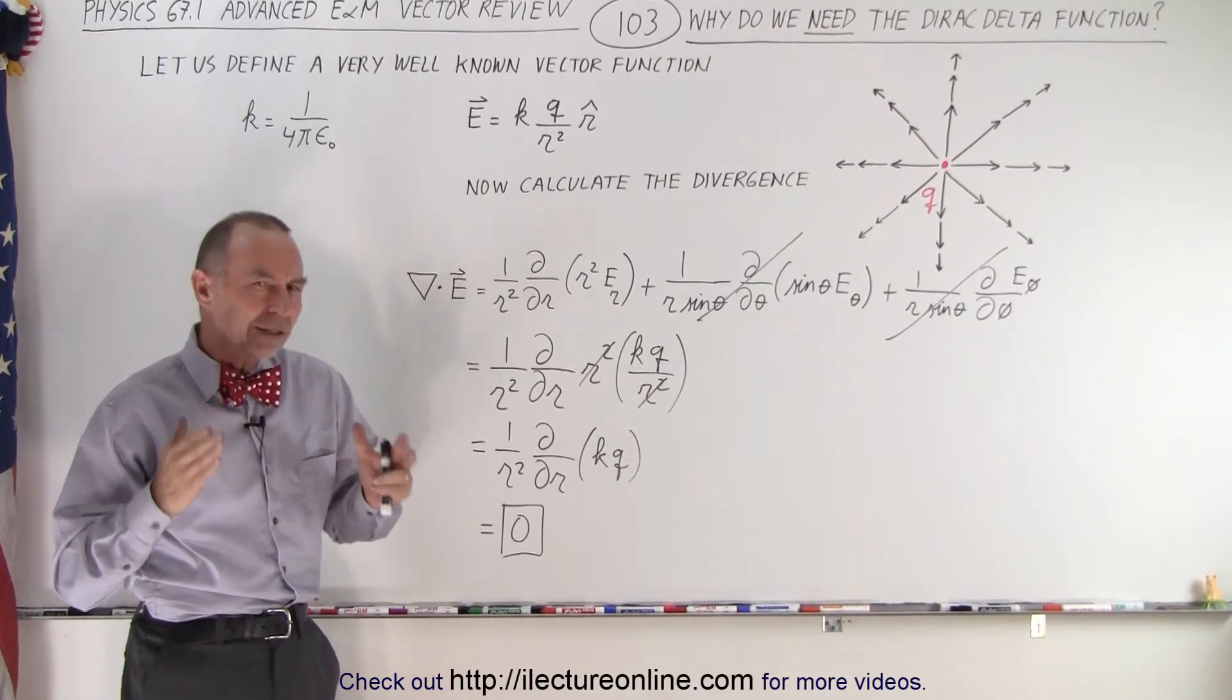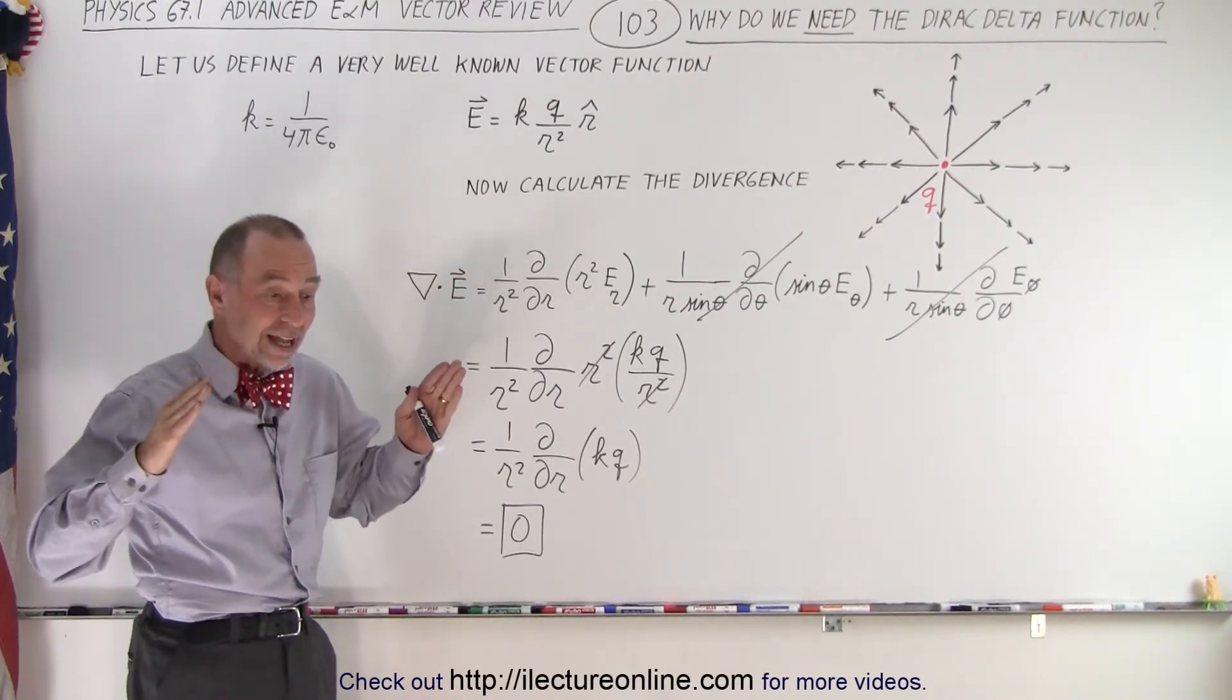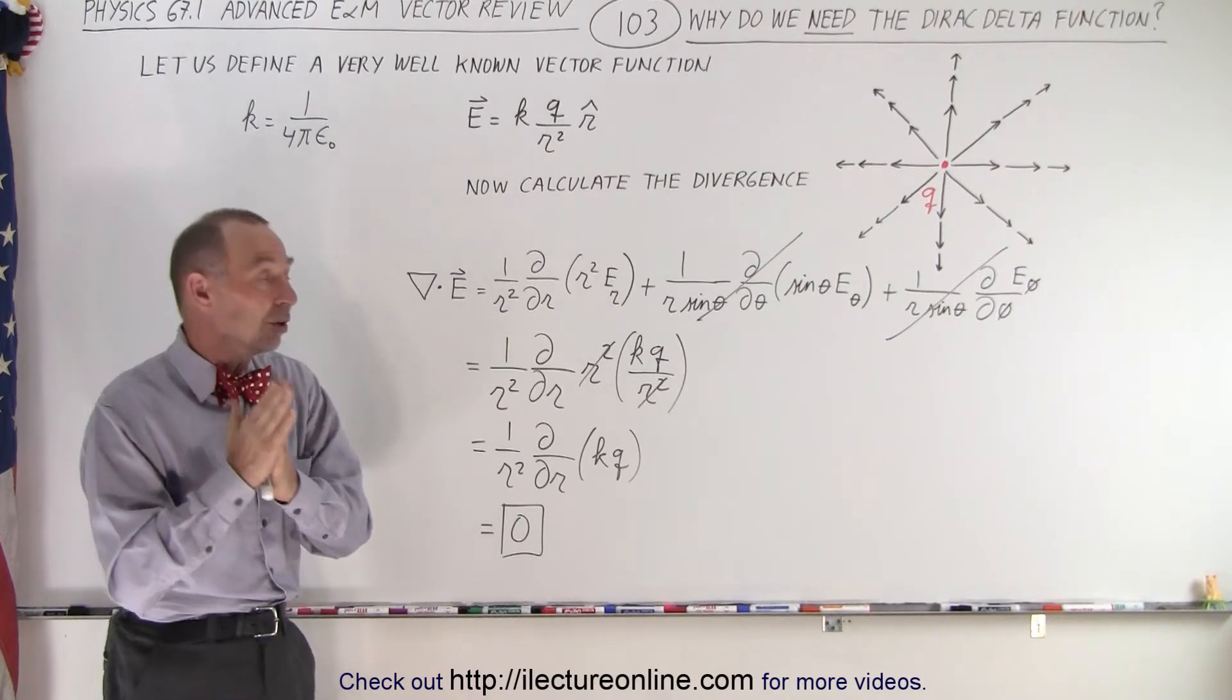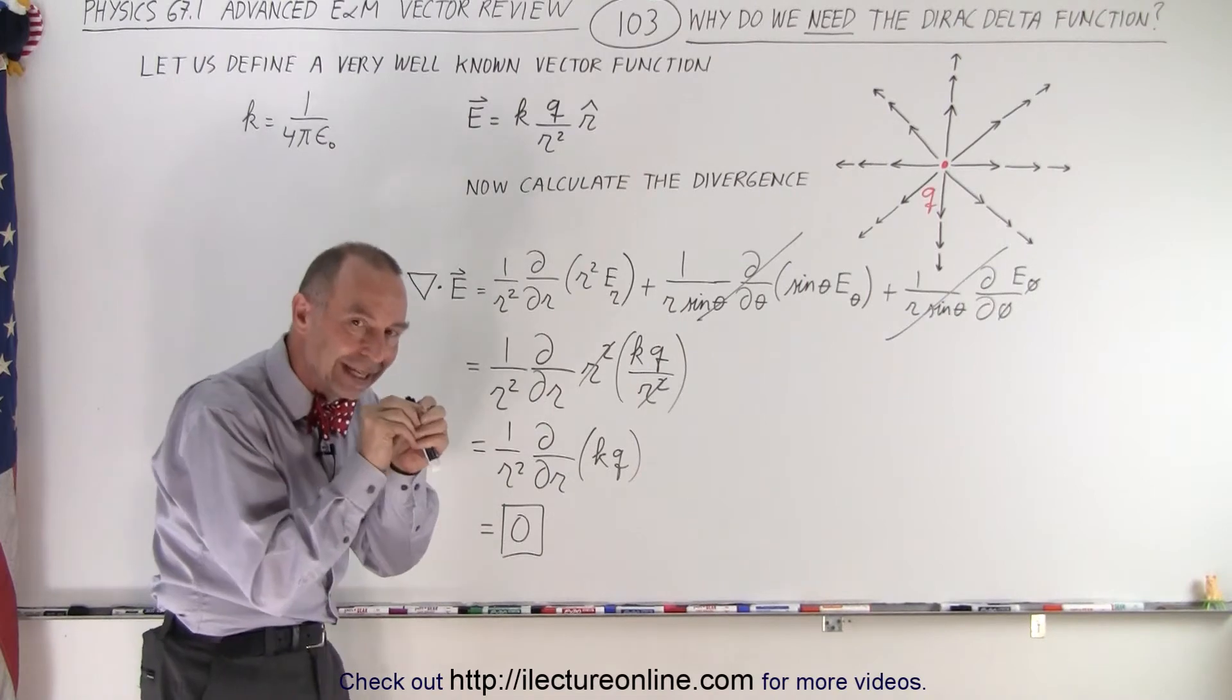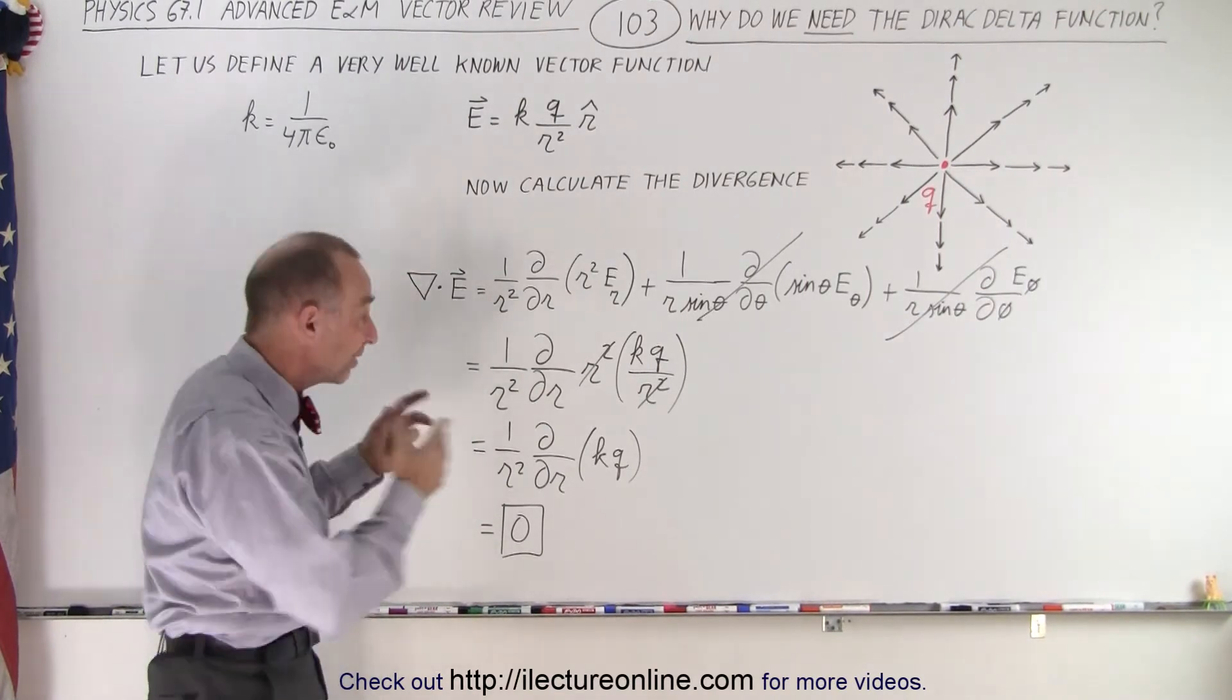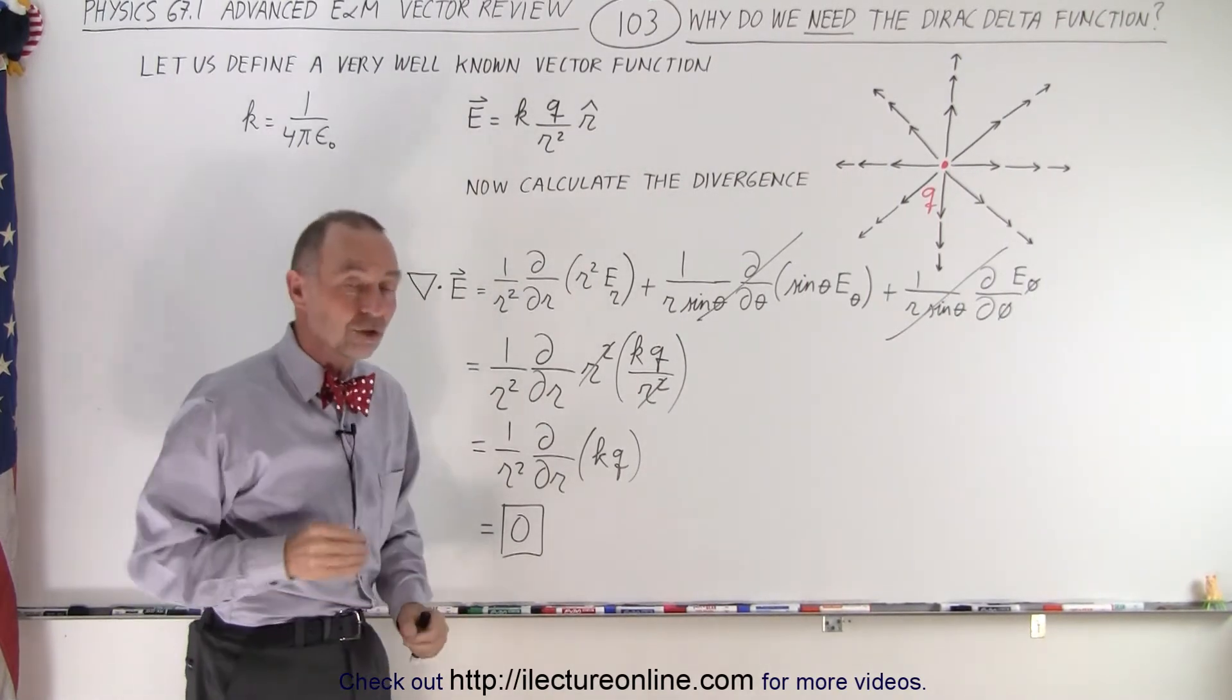A point charge has 0 volume. Kind of like the Dirac delta function, which is not defined until x becomes 0. There's no charge for a point charge until the position is at x equals 0, or in this case, r equals 0.